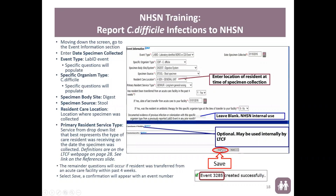Once you've completed the event, select Save. You'll see a confirmation popup saying it was created successfully, along with an event number. You can write this down on the event reporting form or use it to track a specific event for a resident. As mentioned, there are many ways to search for an event — by resident ID number, name, date of event, or event ID number — so you do not have to write it down if you prefer.